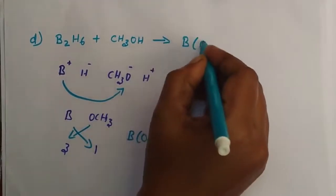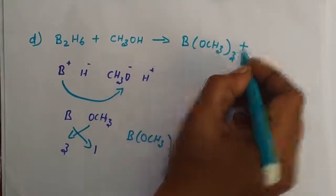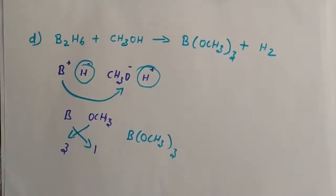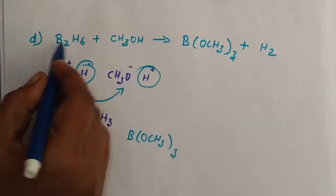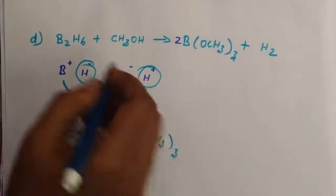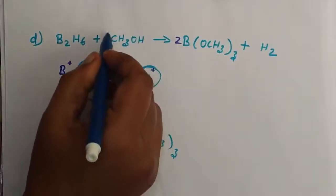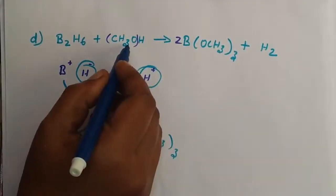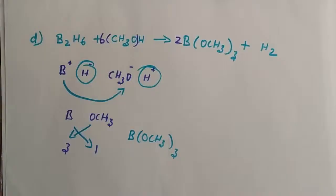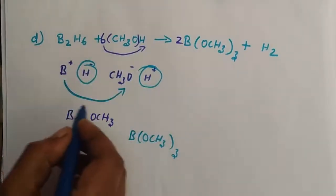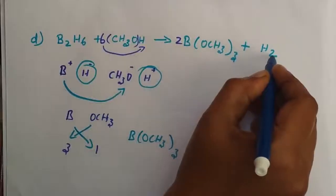B(OCH3)3 is one product. The other product is liberation of hydrogen H2. To balance: we have 2 boron, and with 6 OCH3 groups — putting 6 OCH3 we get 6 hydrogen from CH3OH, plus 6 hydrogen from B2H6, giving 12 total hydrogen, balanced as 6 H2.